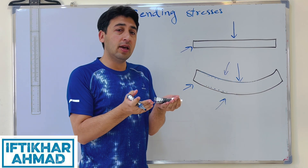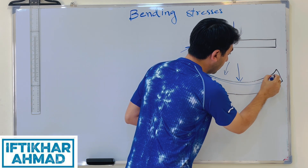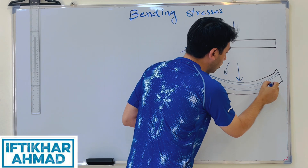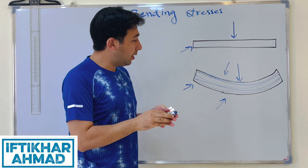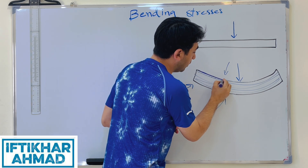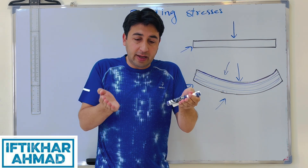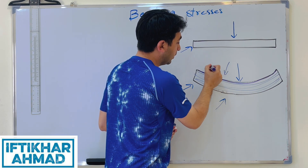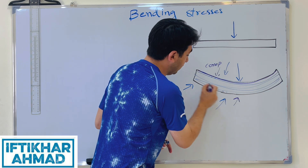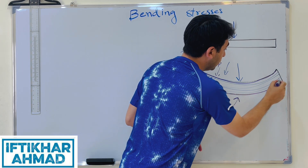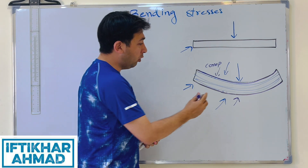To explain bending stresses, it helps to divide the beam into small fibers. Once we apply the force and the beam bends, the extreme fiber on the top surface compresses — there is compression at the top. But looking from the bottom, that fiber extends, so there is tension at the bottom extreme fiber.